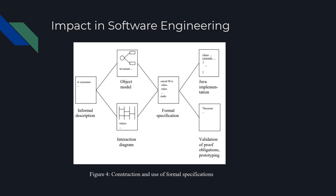They attempted this by combining Jacobson's object-oriented software engineering with object-oriented algebraic specifications. The result is that any diagram can be associated with a formal specification. Proof obligations that ensure invariant properties can be automatically generated, and the refinement relations between documents on different levels of abstraction can be formally stated and proved. They call this new method formal object-oriented software engineering, or FOOSE.